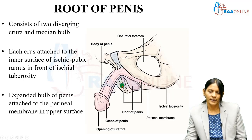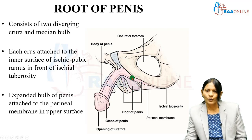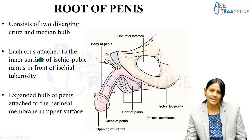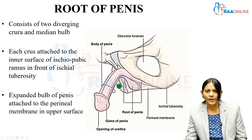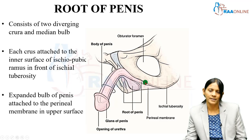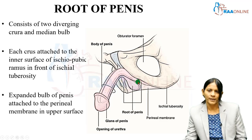As regards the root of the penis, as depicted in the schematic diagram, the root has two limbs called the crura — singular: crus, which in Latin means limb. Because they are like two legs, they are called the crura of the penis. The root consists of two crura in the posterior aspect and a midline structure called the bulb of the penis.